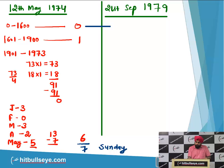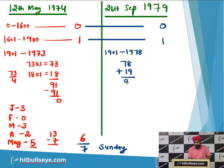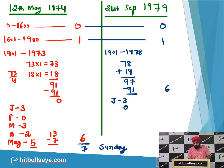For 21st September 1979: till 1600 it will be 0 odd days; till 1900 it will be 1 odd day. Then from 1901 to 1978, that is 78 years plus 78 divided by 4 = 19 leap years giving 1 extra odd day each. So 78 + 19 = 97, and 97 minus 91 gives 6 odd days.